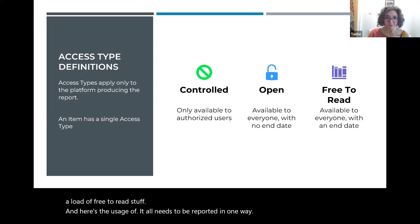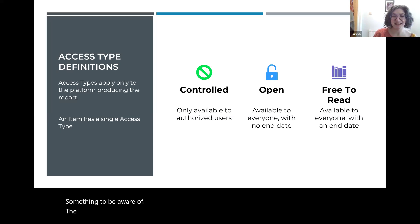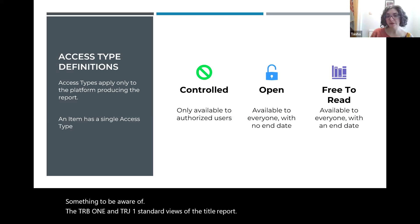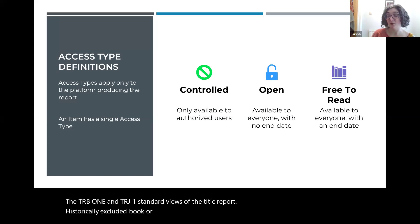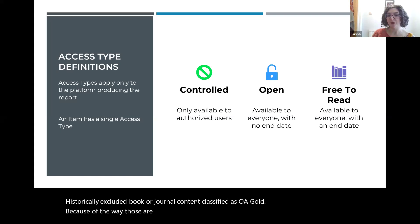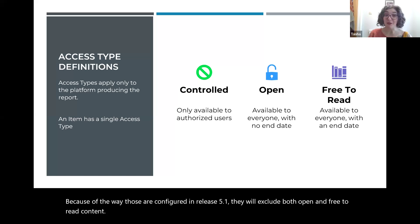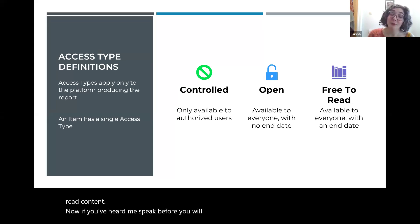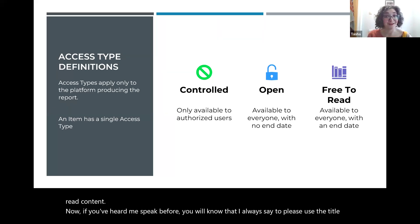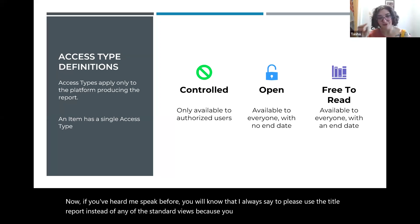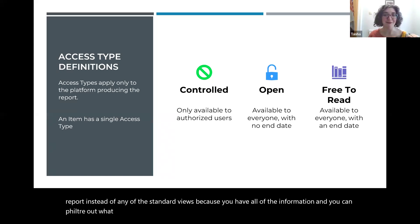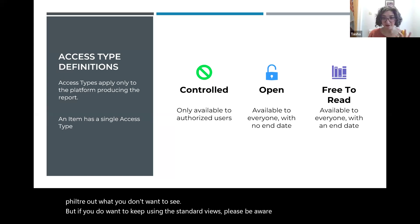The TR_B1 and TR_J1 standard views of the title report historically excluded content classified as OA gold. In release 5.1, they will exclude both open and free to read content. If you've heard me speak before, I always recommend using the full title report instead of standard views, since you have all the information and can filter what you don't want to see. But if you do use standard views, please be aware they have slightly changed.